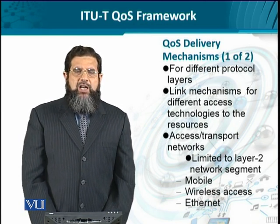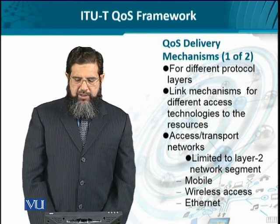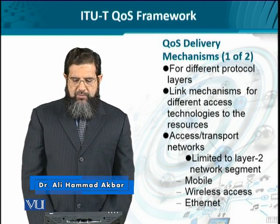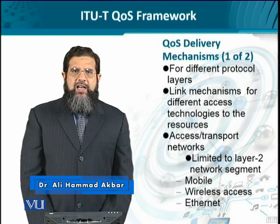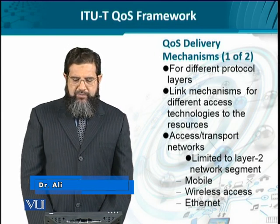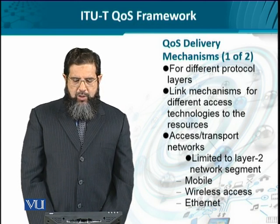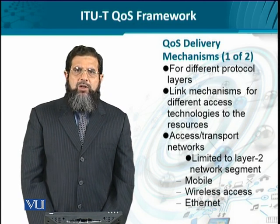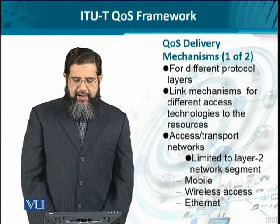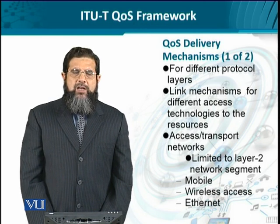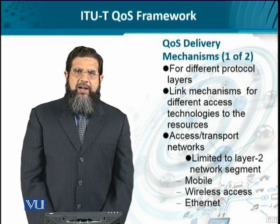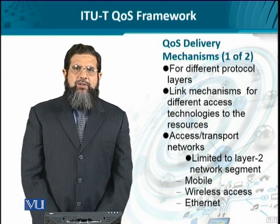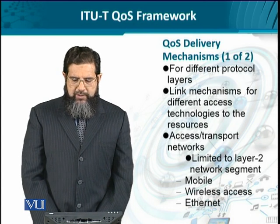The QoS delivery mechanisms in IP-based networks are actually provided at different layers. For instance, if we look at layer 2 — the data link layer — these mechanisms actually allow the management of admission control and signaling at different access technologies in terms of the resources available at layer 2, such as the send and receive buffers.